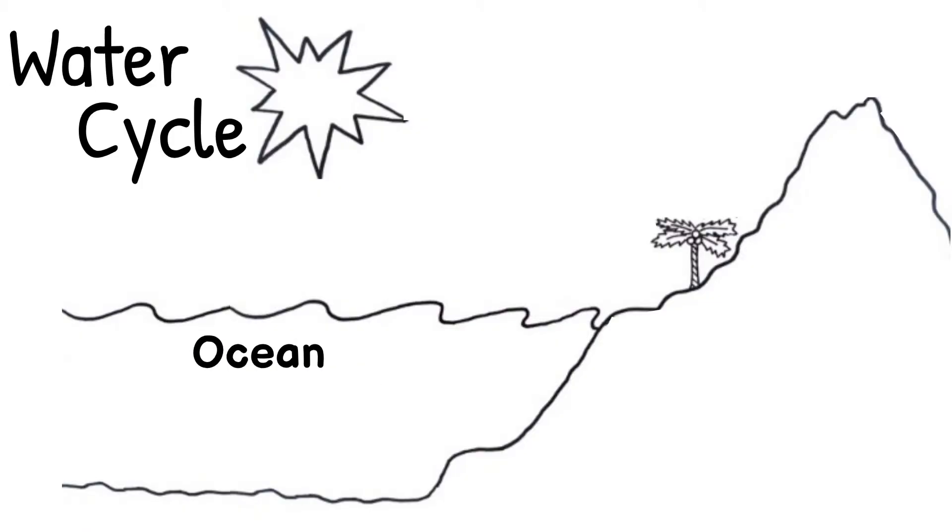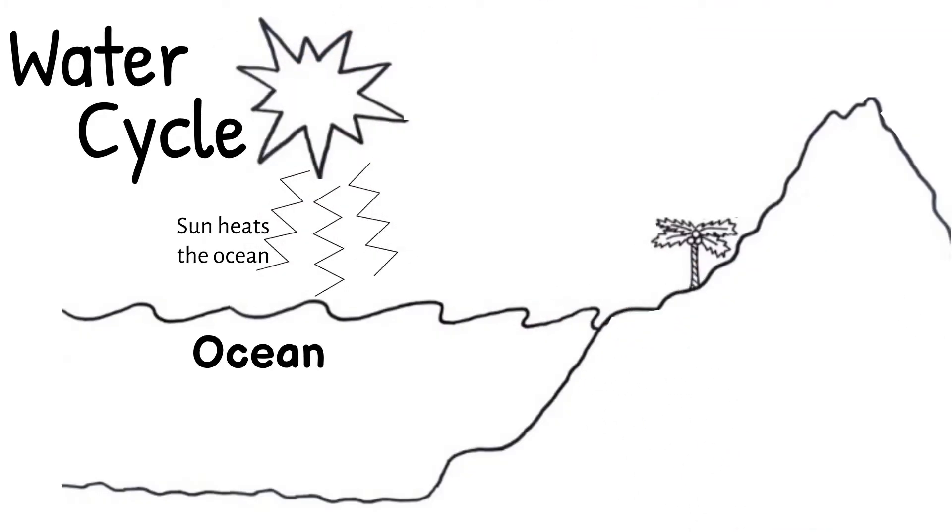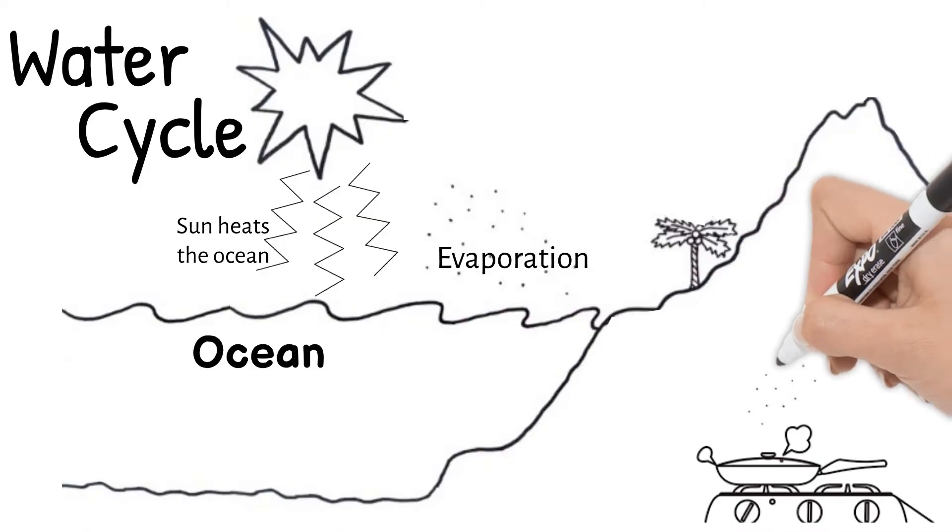The sun heats up the ocean, which causes evaporation. Evaporation is the process of water changing from a liquid to a gas, and is always caused by heat. If you boil a pot of water too long, all of the water will eventually seem to disappear from your pot. It actually evaporated to a gas and is now in the air.